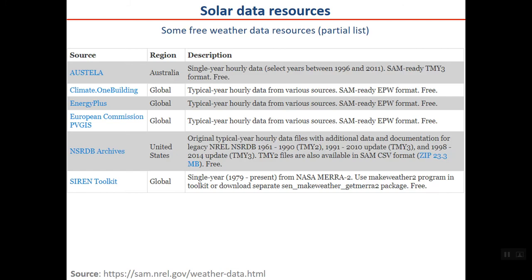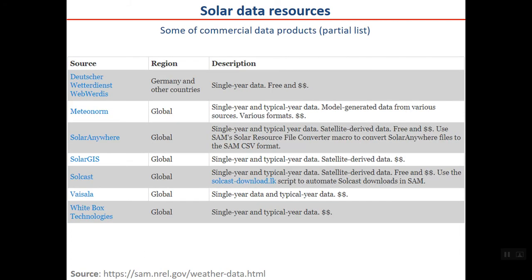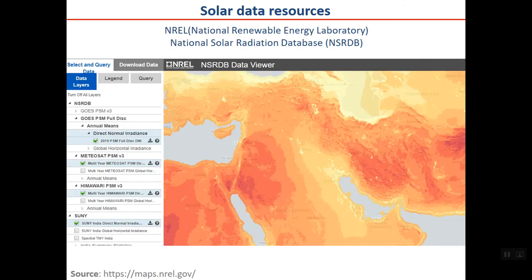The third type is radiation models — mathematical models used to model solar radiation. We will discuss different models later, as this is an important topic especially for locations where ground or satellite data are not available or are missing. There are many data sources; some are free and some are commercial (requiring payment). The following is a partial list of both free and commercial solar data resources.